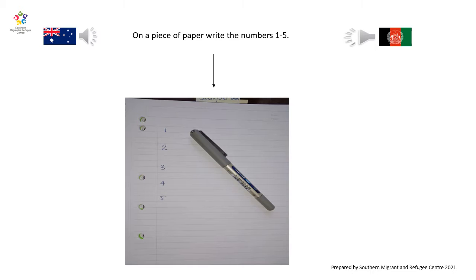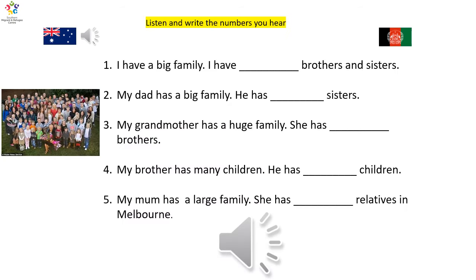On a piece of paper, write the numbers 1 to 5. Listen and write the numbers you hear.